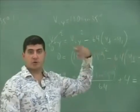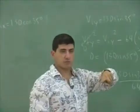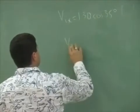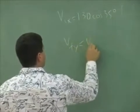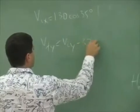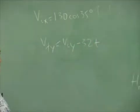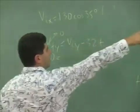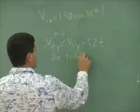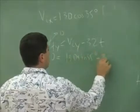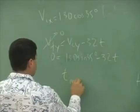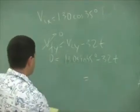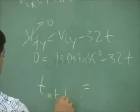T max is the time to get there. We can use the first equation, which is V final Y is equal to V initial Y minus, we use 32, since we're in the British system, 32T. Set this equal to 0. V initial Y is 130 sine of 35. And then that's going to be T max. Or it's probably better to say T at H max. T at H max.